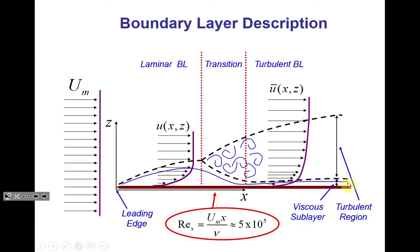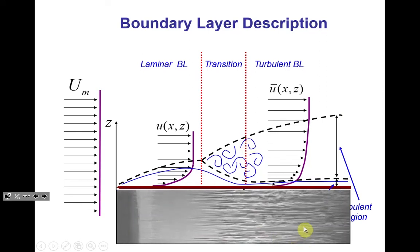Within the fully turbulent part of the boundary layer, there are still two regions: the turbulent region, which is the major part, and a very thin viscous sublayer where viscosity dominates and the flow is nearly laminar. In real applications this sublayer is one millimeter or less. It looks negligible, but physically it cannot be neglected — it plays a crucial role in dynamics. Even very small things can have major influence.